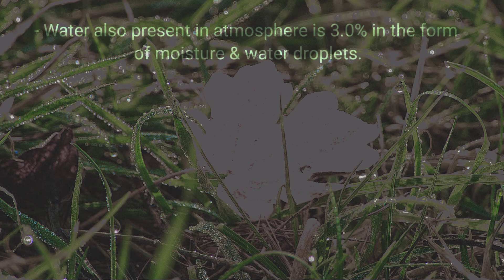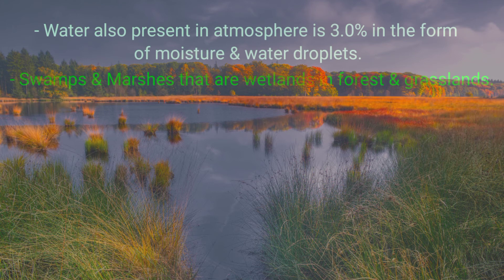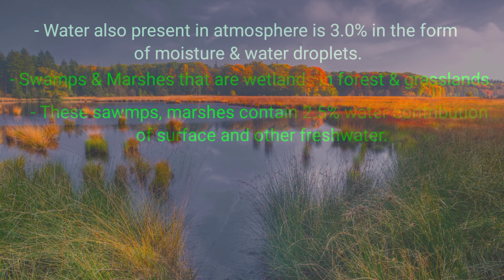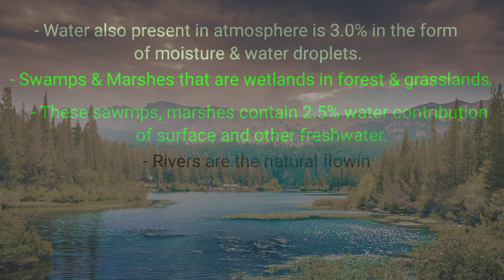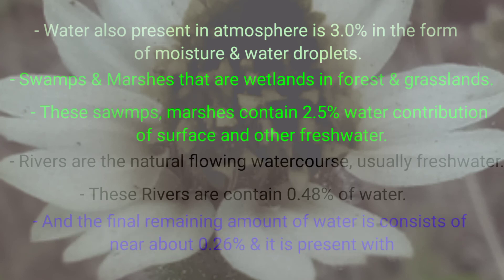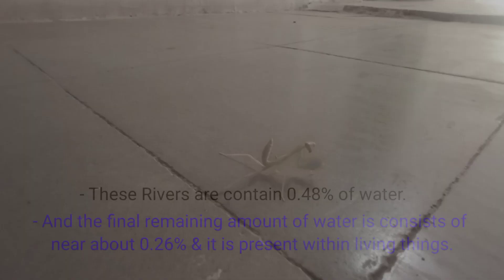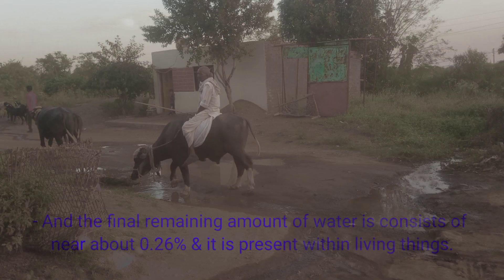Water is also present in the atmosphere at 3.0 percent in the form of moisture and water droplets. Swamps and marshes, which are wetlands in forests and grasslands, contain 2.5 percent of water. Rivers are natural flowing water courses, usually fresh water, containing 0.48 percent. The final remaining amount of water, about 0.26 percent, is present within living things such as plants, animals, and microorganisms.